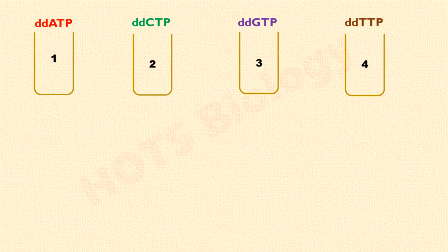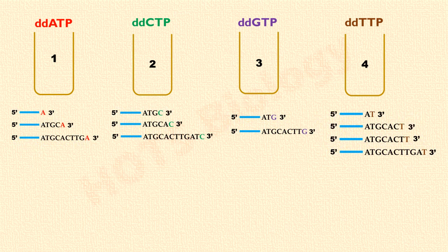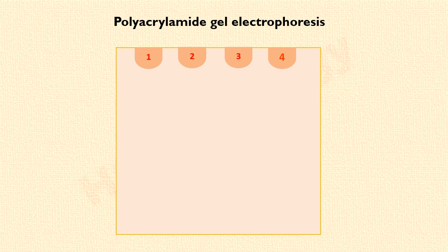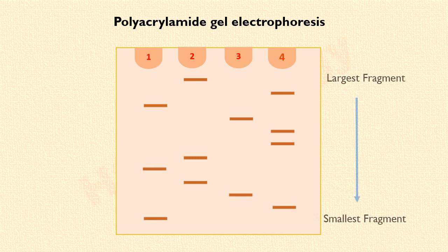Upon the completion of the 4 parallel reactions, partial replication DNA products will occur for every nucleotide in the template. That means each reaction has a set of DNA fragments that have the same starting point but different end points. In the next step, these reaction mixtures are subjected to polyacrylamide gel electrophoresis. The contents of each reaction are loaded into separate lanes. Polyacrylamide gel electrophoresis separates the partial DNA fragments of each reaction on the basis of their size.